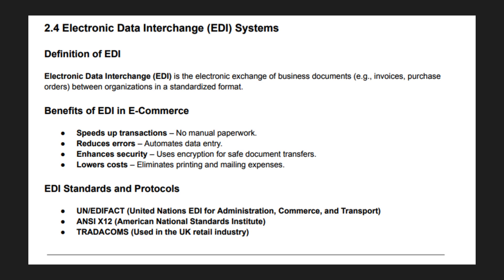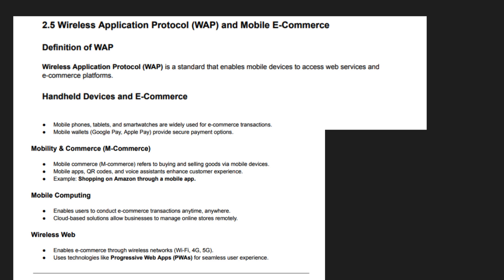Wireless Application Protocol, or WAP, enables mobile devices to access web-based services and is the foundation of mobile commerce, allowing transactions via smartphones and tablets. WAP compresses data for efficient transmission over limited bandwidth networks. Early WAP phones allowed users to browse simplified web pages and send secure payments. Today, modern mobile commerce relies on advanced wireless protocols like LTE, 5G, and Wi-Fi. Mobile banking, digital wallets, and contactless payments have revolutionized online transactions.